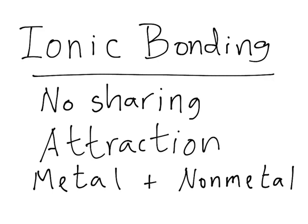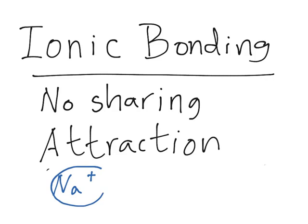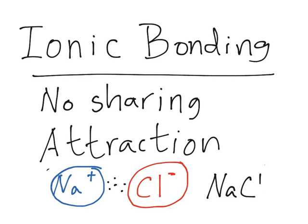What occurs in an ionic bond — let's say we have sodium, which is positive, and chlorine, which is negative. Opposite charges attract each other, so there is going to be attraction between them. There is no sharing of electrons, just attraction, and they form a compound: NaCl. That is how an ionic bond is formed — by the attraction of two opposite charges.